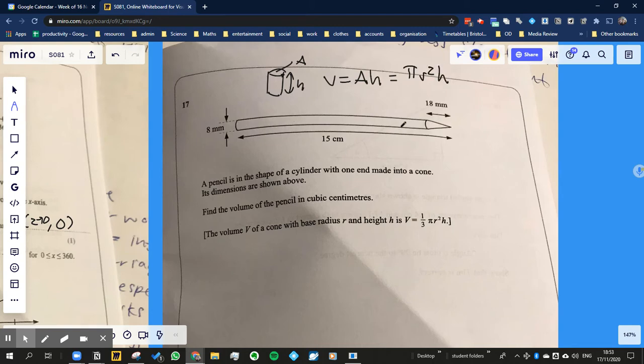So the volume of the cylinder part of the pencil is just going to be πr²h, and it's giving you the volume of the cone at the end. So the total volume, I guess I'm just going to put this is volume one, and then the total volume which I'm going to call V_t is going to be equal to πr²...